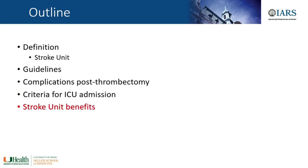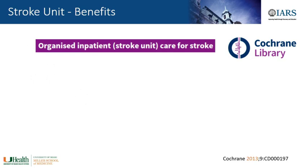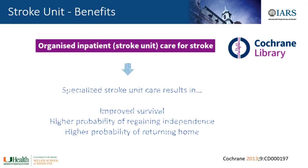Lastly, let's discuss some potential benefits of having a stroke unit. A 2013 Cochrane review on organized inpatient stroke unit care for patients with acute ischemic stroke found that specialized stroke unit care results in improved survival, a higher probability of regaining independence, and a higher probability of returning home. Importantly, most of the studies used in this review involved patients who were not critically ill — mostly patients who might go to a regular hospital ward rather than an ICU.